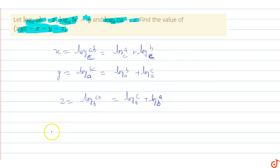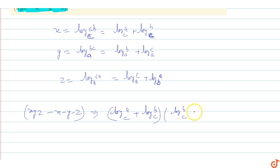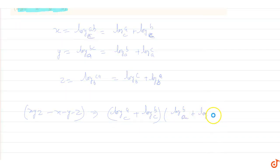Now here we can write xyz minus x minus y minus z. So x is log(a) base c plus log(b) base c, multiplied by y which is log(b) base a plus log(c) base a.